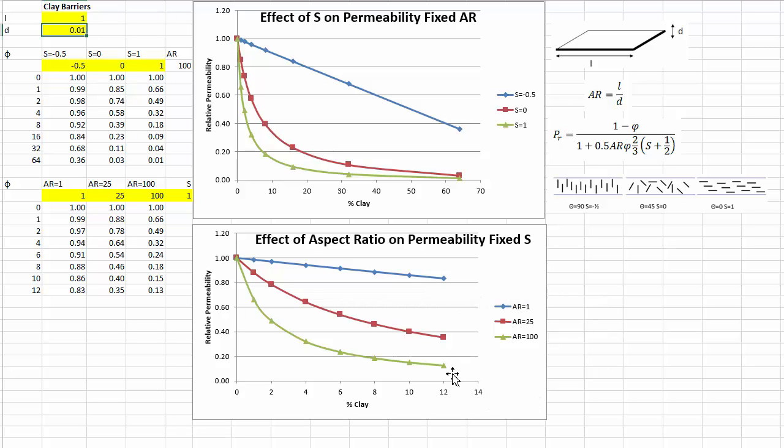And when we have a good aspect ratio equals 100, a decent clay, then by the time we've added 12 percent we're down to less than 10 percent of the original permeability. So achieving this is hard. You need to have the high aspect ratio and well dispersed clays.